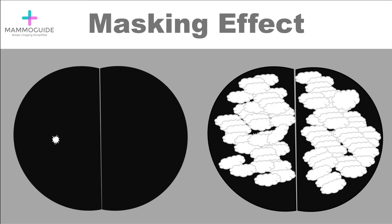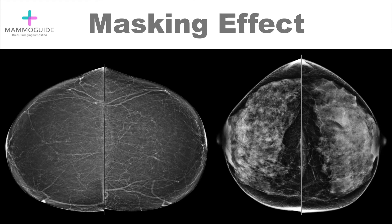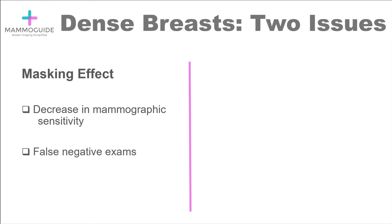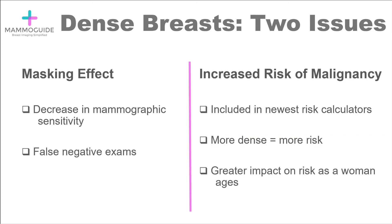In a fatty breast, it's very easy to see a small spiculated mass, whereas with a lot of dense fibroglandular tissue, it's much more difficult to identify the malignancy. Dense breast tissue really presents two issues: one is the masking effect, which decreases mammographic sensitivity and can lead to false negative exams; the other is an increased risk of malignancy. Breast density is now included in the newest risk assessment models, and as we discussed, the denser the breast tissue, the higher the risk.